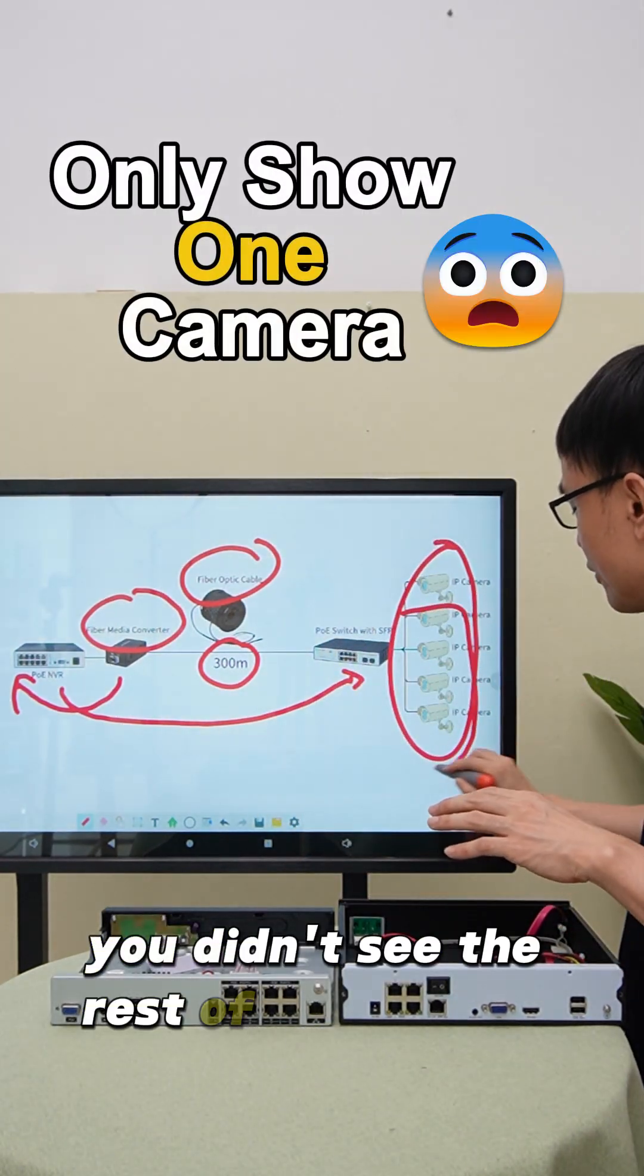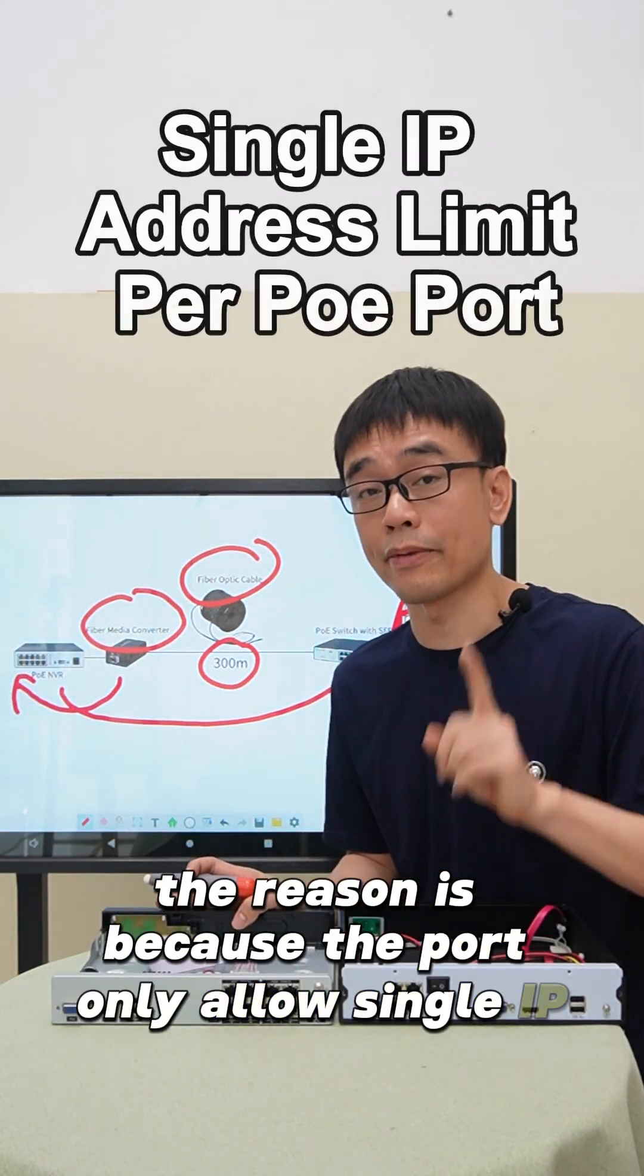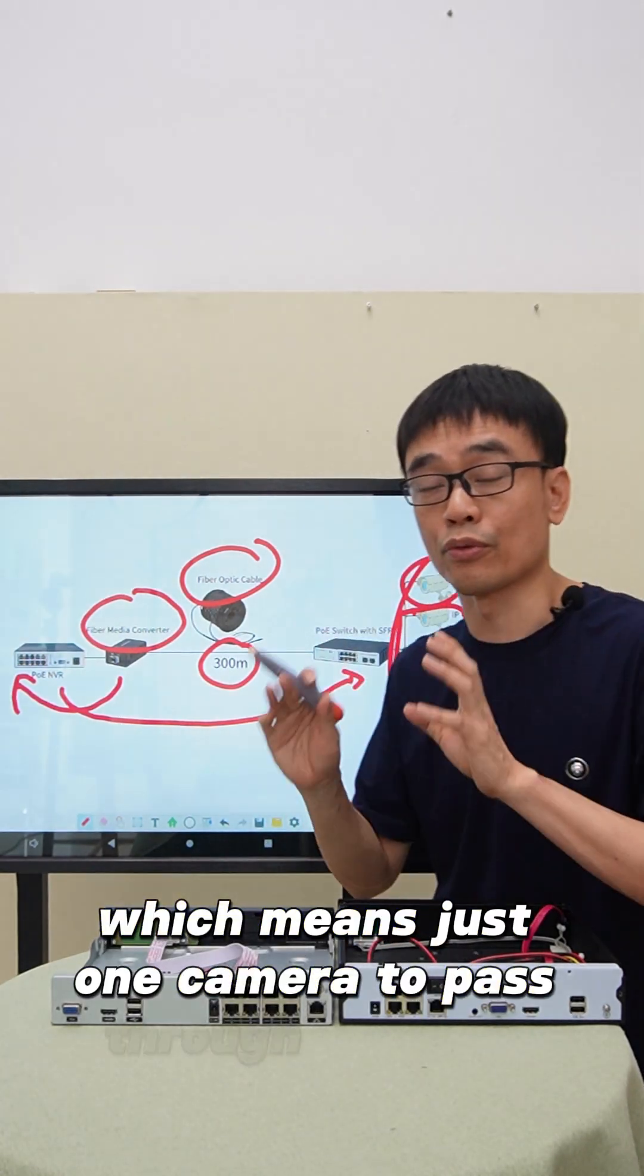He didn't see the rest of the cameras. The reason is because the port only allows a single IP address, which means just one camera can pass through normally.